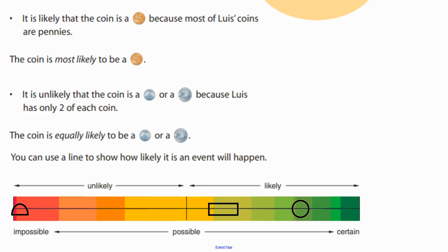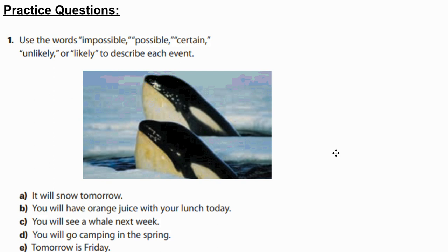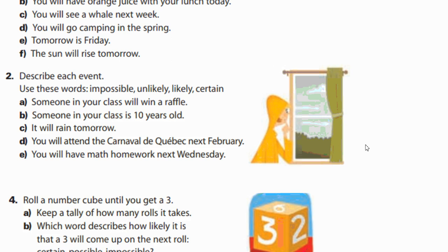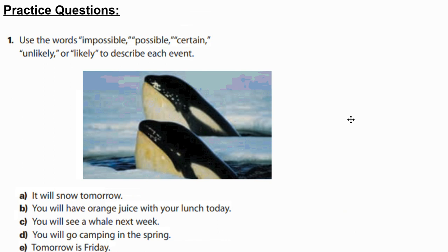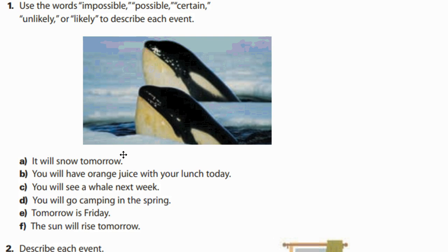There are some practice questions here using the words impossible, possible, certain, unlikely, and likely to describe each event. For example, let's do the first one together: will it snow tomorrow in June? Yes, it is possible — but is it likely? Probably not. So that would be a possible but unlikely event, because even though we may have had snow in June in Saskatchewan, it's not very likely to happen tomorrow.